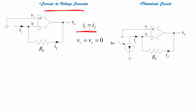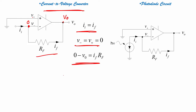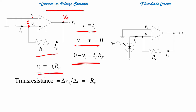V plus equals V minus equals 0. So substituting values: 0 minus Vo is nothing but minus IF divided by Rf. Therefore Vo equals minus IF × Rf, which equals minus I1 × Rf.